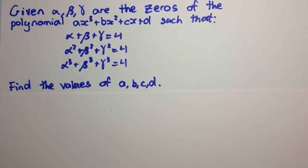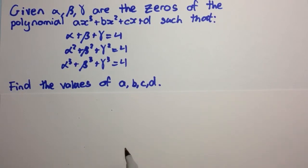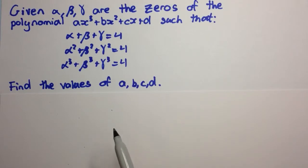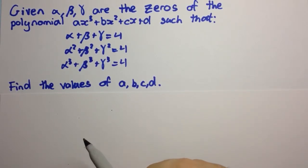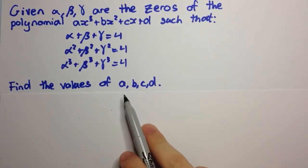Welcome to today's video, everyone. So today we're going to be seeing a question that was part of my half yearly when I did the HSC. The question is: given alpha, beta, and gamma are the zeros of the polynomial ax cubed plus bx squared plus cx plus d, such that alpha plus beta plus gamma equals 4, alpha squared plus beta squared plus gamma squared equals 4, and alpha cubed plus beta cubed plus gamma cubed equals 4, find the values of a, b, c, and d.